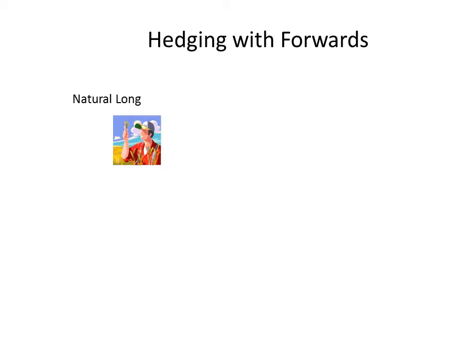Let's imagine that we have a farmer who is a grower of wheat, barley, sugar, coffee, or cocoa. As such we refer to the farmer as a natural long. What we mean is that the farmer owns the crops and is going to be thinking about selling them at some stage in the near future. What he's concerned about is that if his crops are still in the ground and he's waiting for harvest time, prices may fall between now and the point of bringing his crops to market.